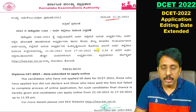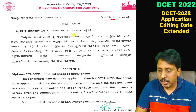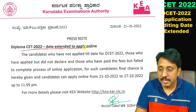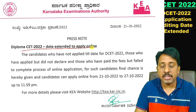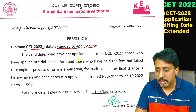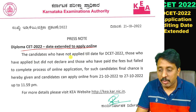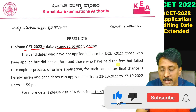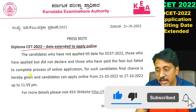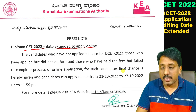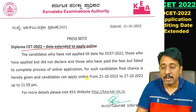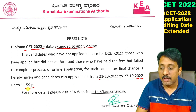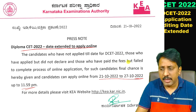Diploma CT 2022 date extended to apply online. The candidates who have not applied till date for DCET 2022, those who have applied but did not declare, and those who have paid the fees but failed to complete the process of online application — for such candidates, a final chance is hereby given. Candidates can apply online from the 21st to the 27th, till 11:59.